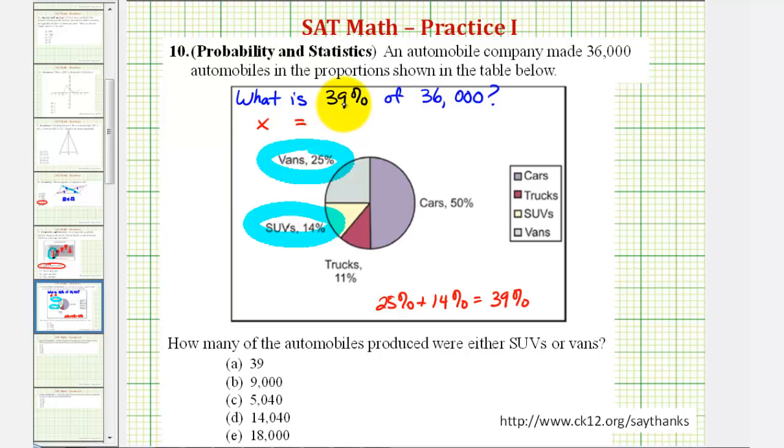We want to write 39% as a decimal. 39% would be 0.39. We drop the percent sign and divide by 100 to convert a percent to a decimal.